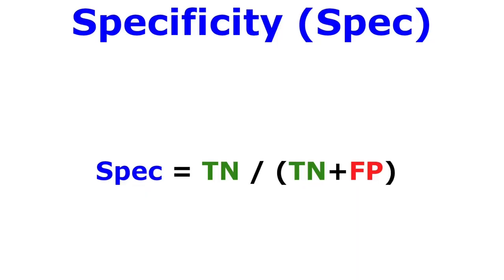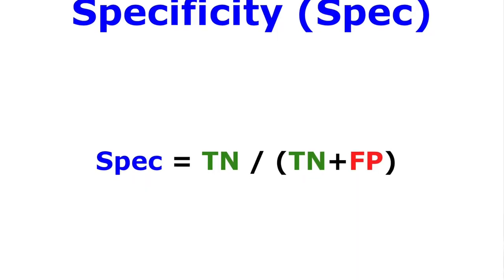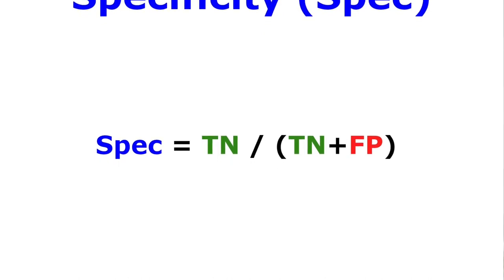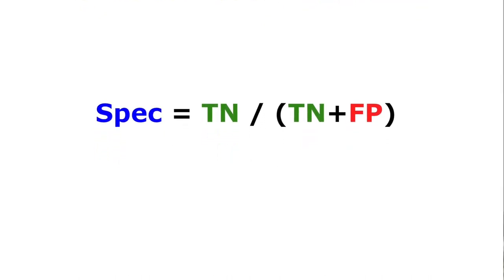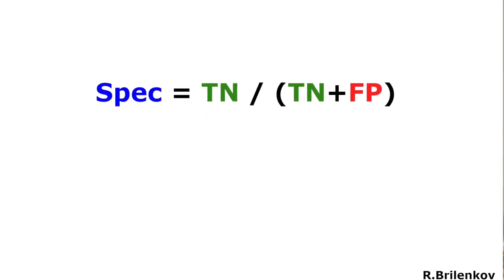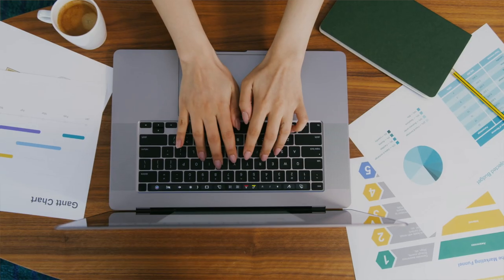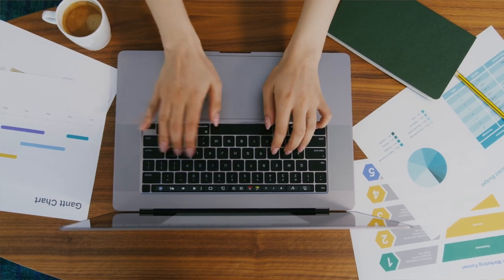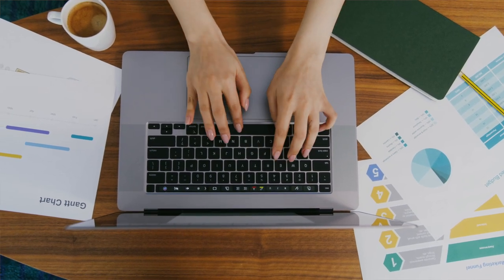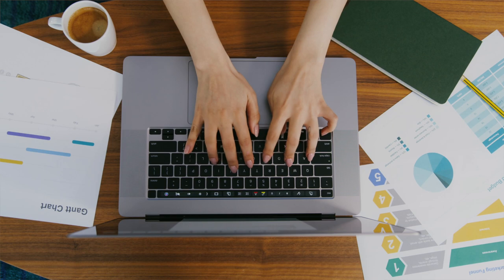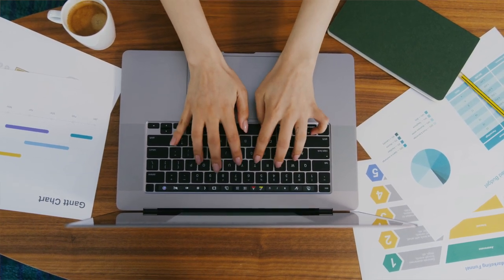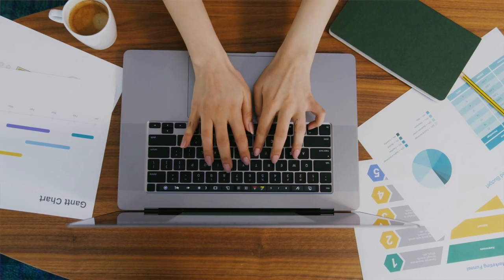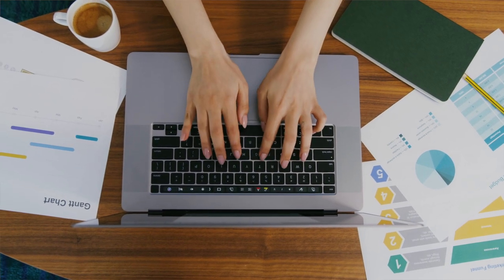Specificity is a ratio of true negatives to all those that are correctly identified as not having the condition by the model. As you can see, the higher number of true positives, the lower the value of specificity. Mathematically speaking, again, a larger denominator leads to a smaller fraction.